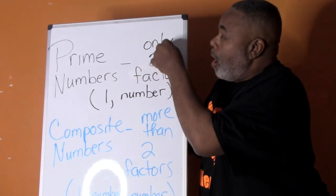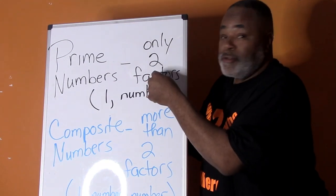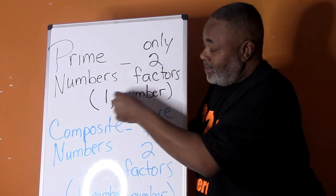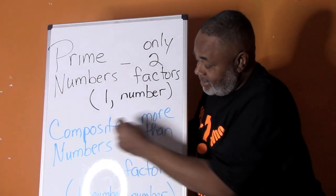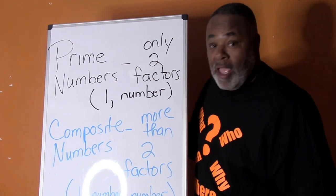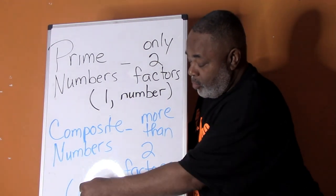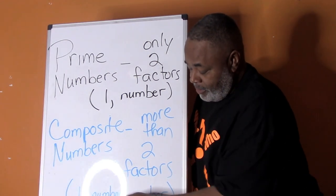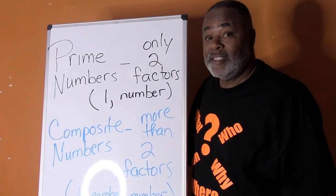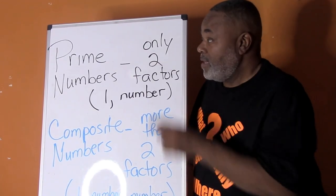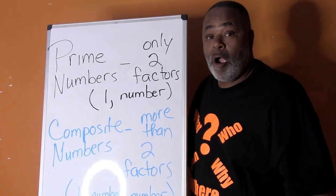Prime numbers only have two factors: one and the number itself. Composite numbers have more than two factors — one, the number, and additional numbers. We're going to look at some examples to make sure that we understand what prime numbers and composite numbers are.